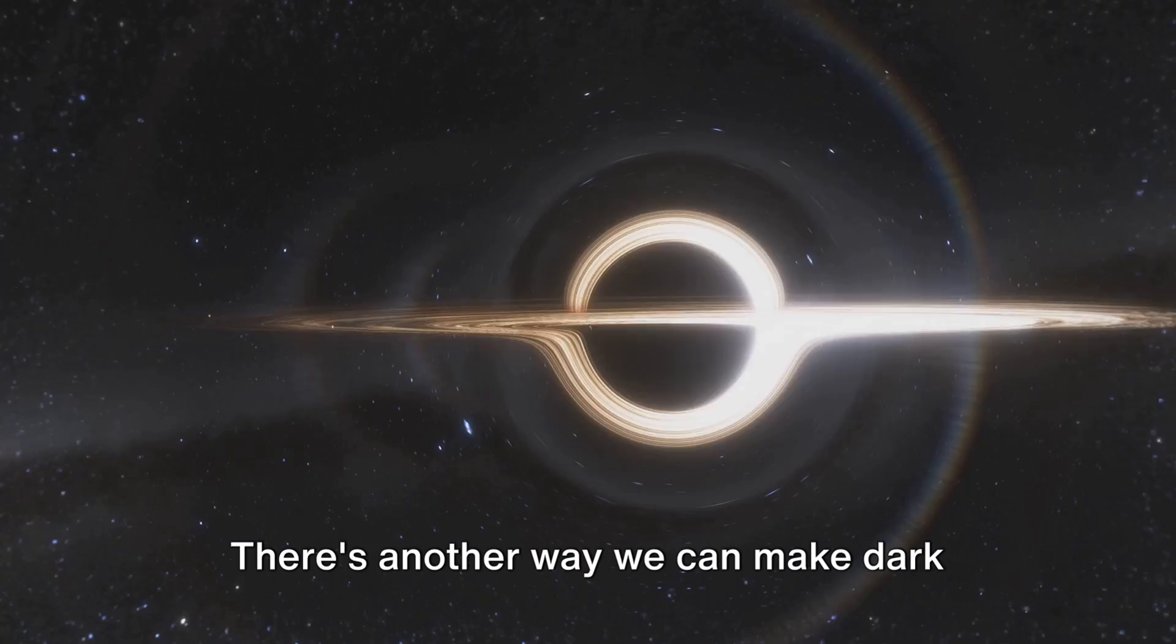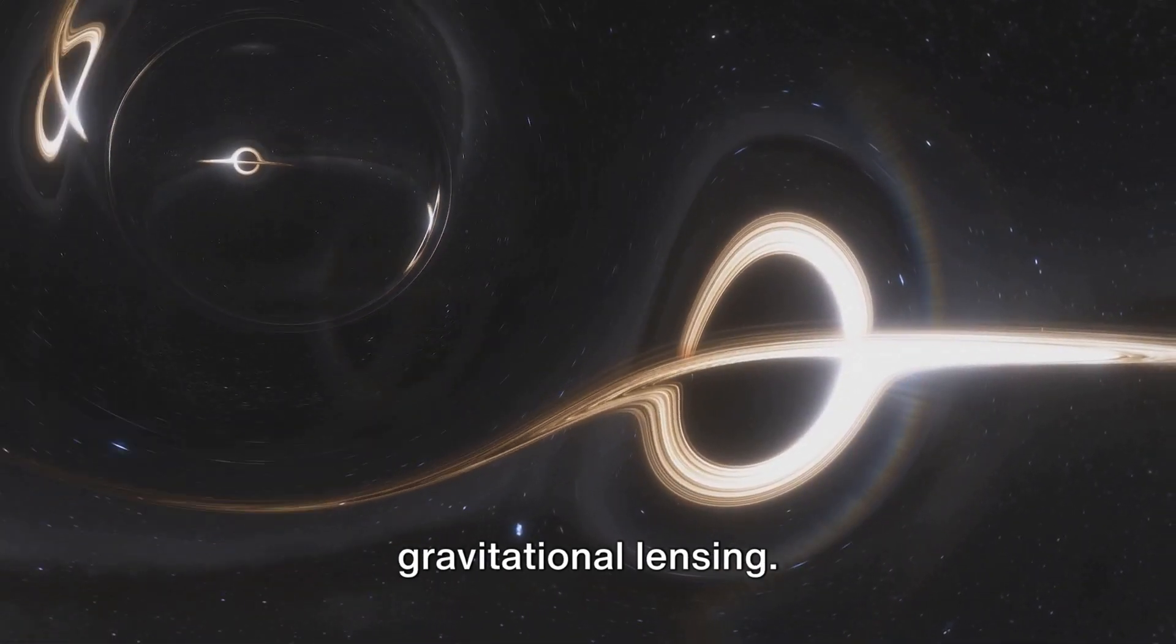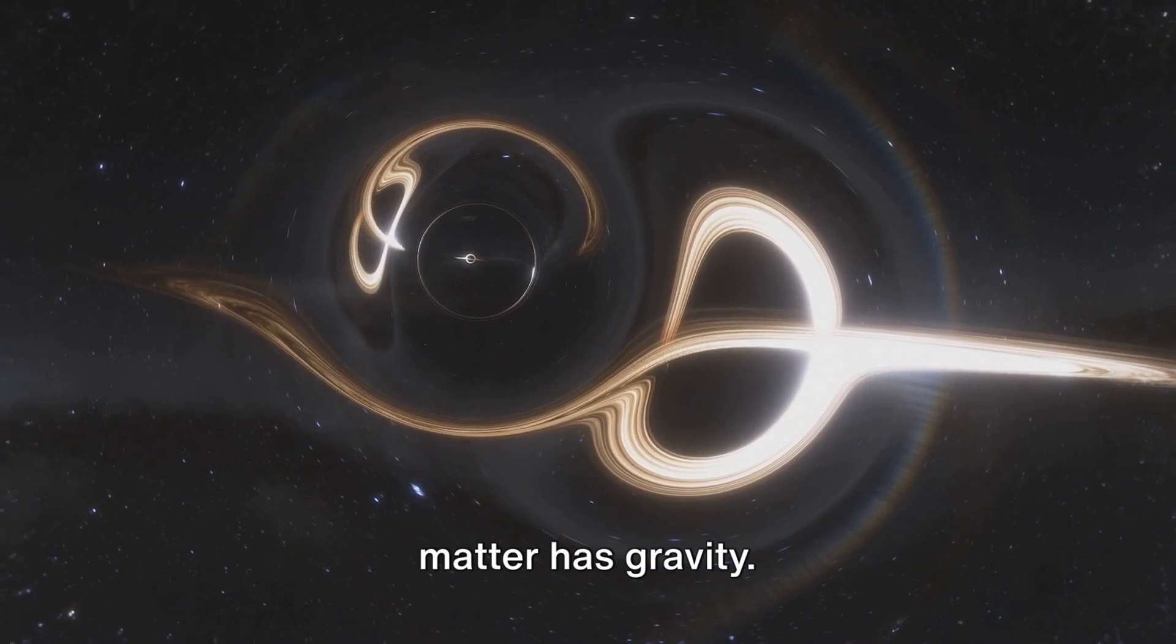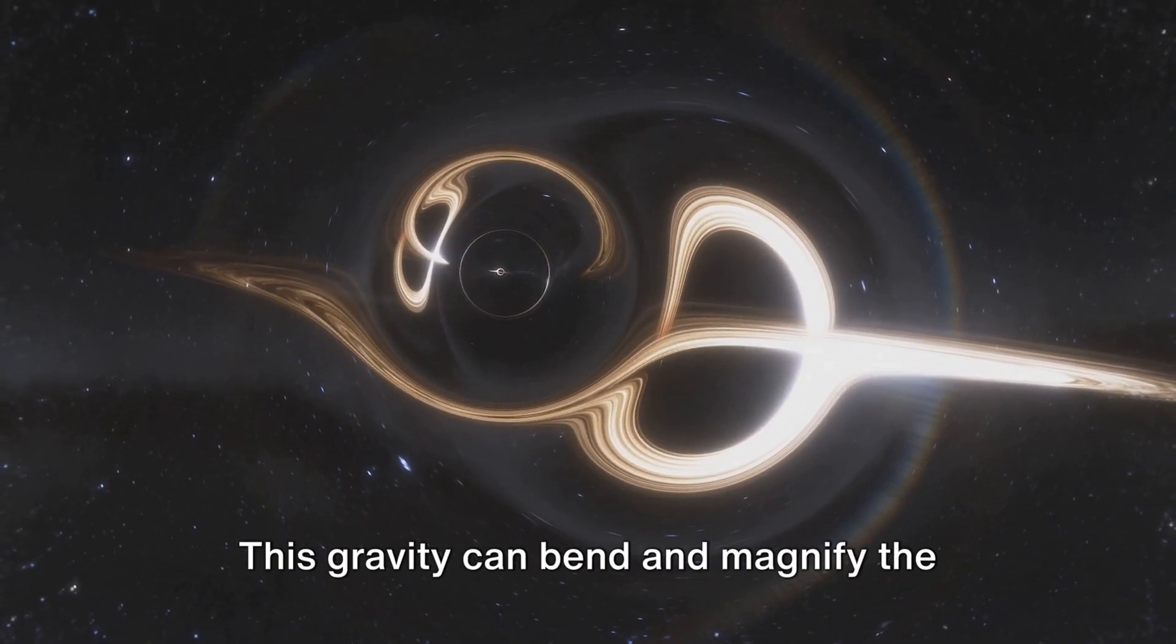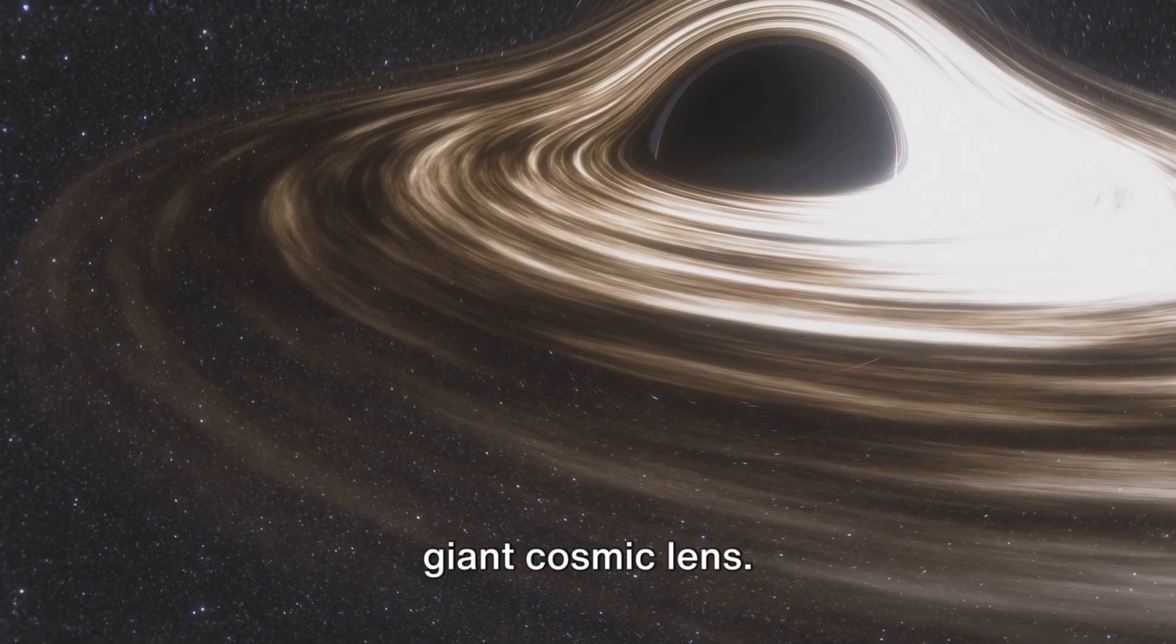But the story doesn't end there. There's another way we can make dark matter visible, and that's through gravitational lensing. Despite being invisible, dark matter has gravity. This gravity can bend and magnify the light of distant galaxies, much like a giant cosmic lens.